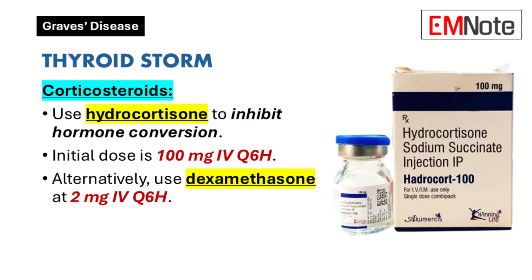Corticosteroids for Thyroid Storm: Corticosteroids play a significant role in managing thyroid storm by inhibiting the peripheral conversion of thyroxine into triiodothyronine. Hydrocortisone is commonly used, with an initial intravenous dose of 100 mg every 6 hours until the thyroid storm resolves.